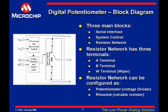A digital potentiometer device has three main functional blocks: the serial interface, the system control, and the resistor network. Today we'll be focusing on the resistor network.